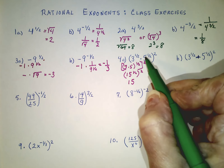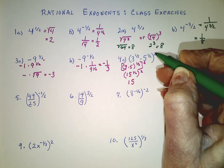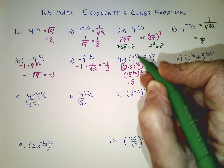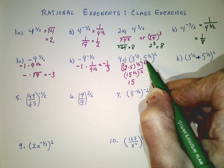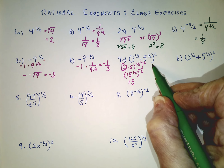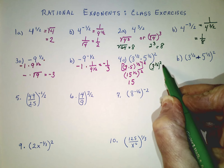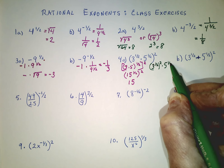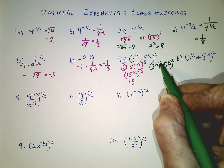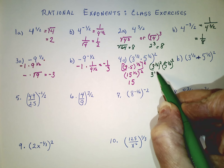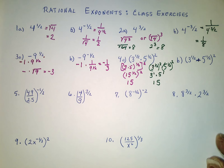Or, because this is multiplication, we can use the power of a product and distribute. Square the first factor times square the second factor. We could make this 3 to the one-half squared, times 5 to the one-half squared. That would be 3 to the first times 5 to the first — we still get 15.